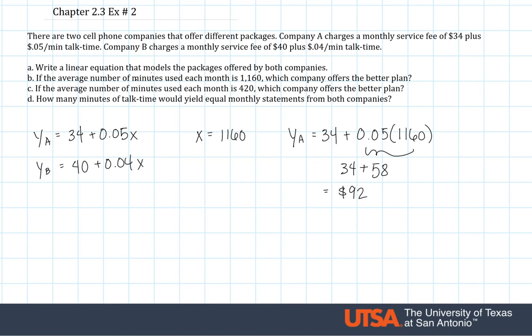Similarly then, we have YB, which would be 40 plus 0.04 times the same amount of minutes. And then this will give me 46.4 plus 40. So at this number of minutes, company B charges $86.40. And then from here, we can conclude that at this amount of time, company B charges less.